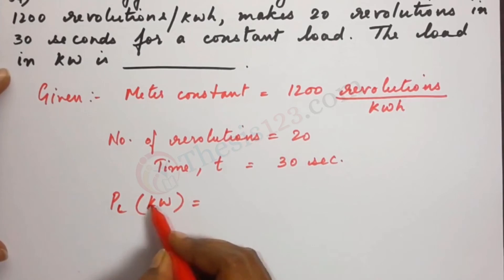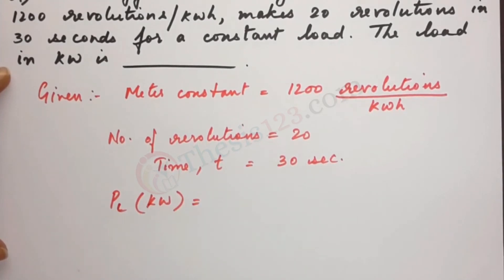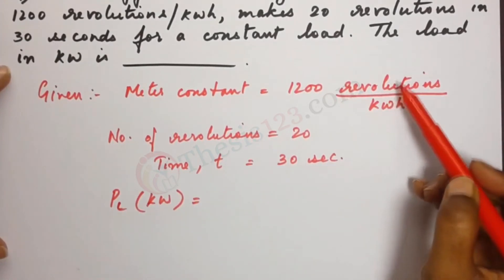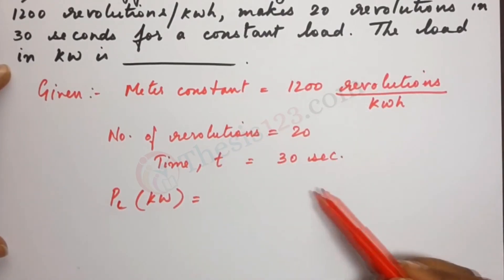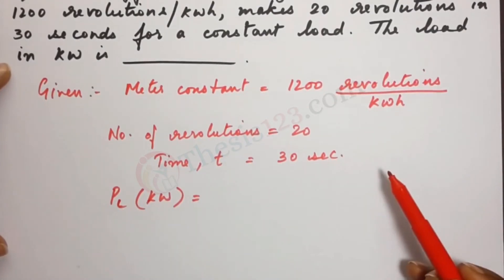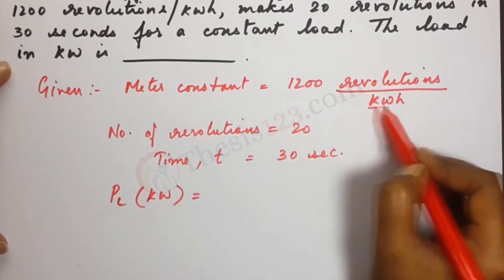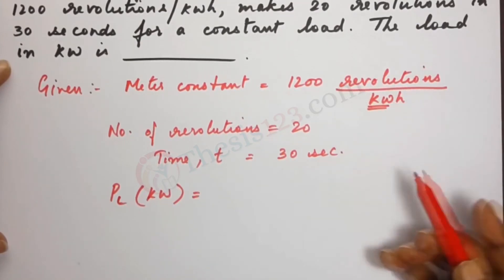So for this question it's just a general play of units. We just have to utilize what's given to us and write an expression in which we are left with just kilowatts and eliminate all the rest.